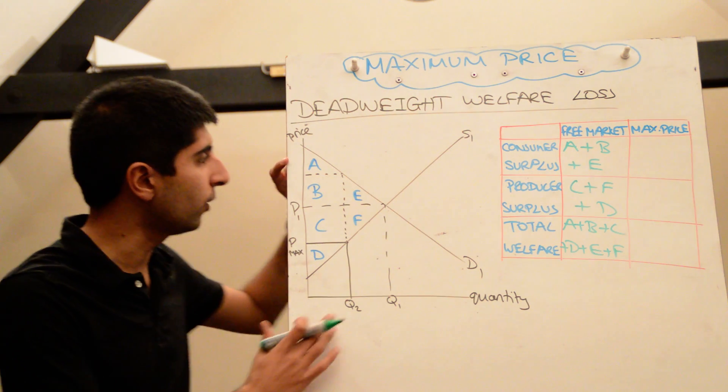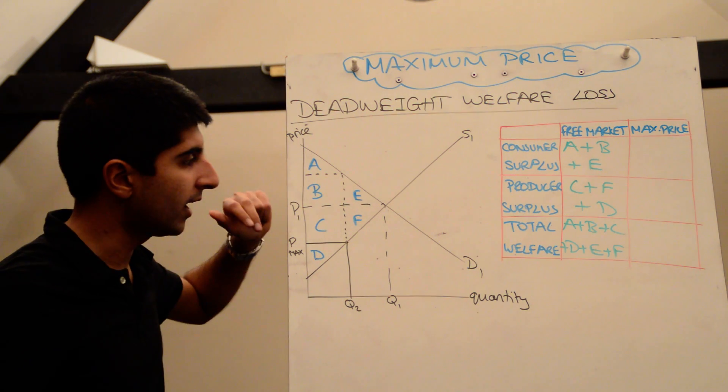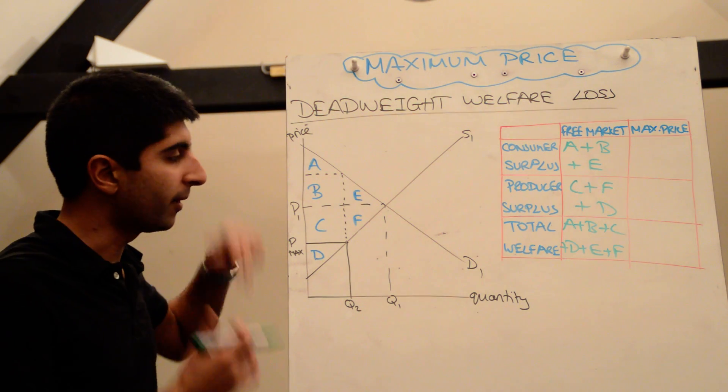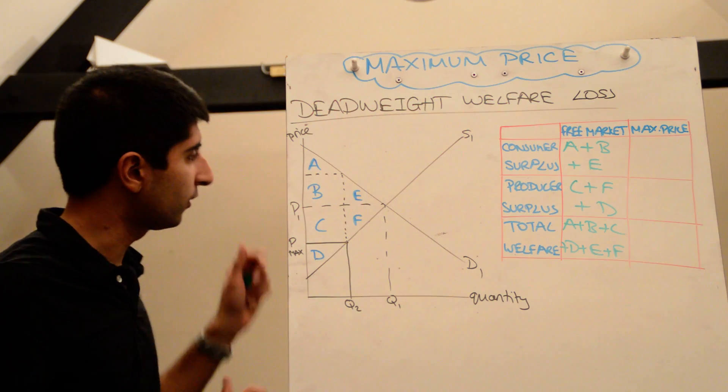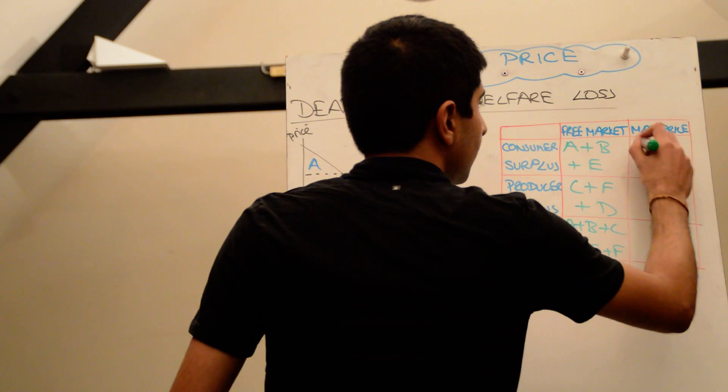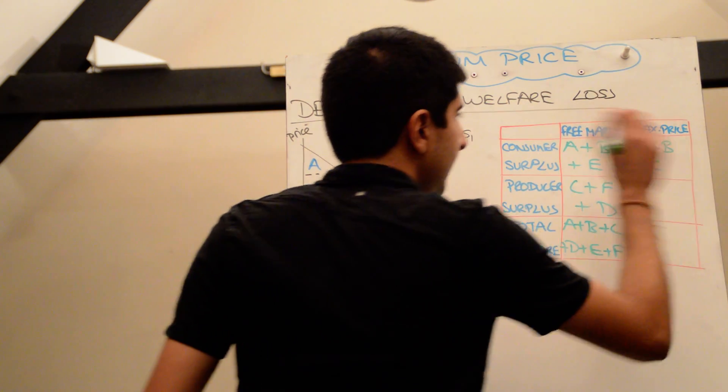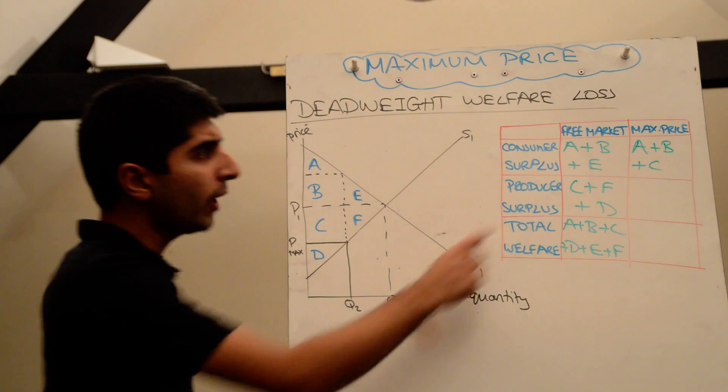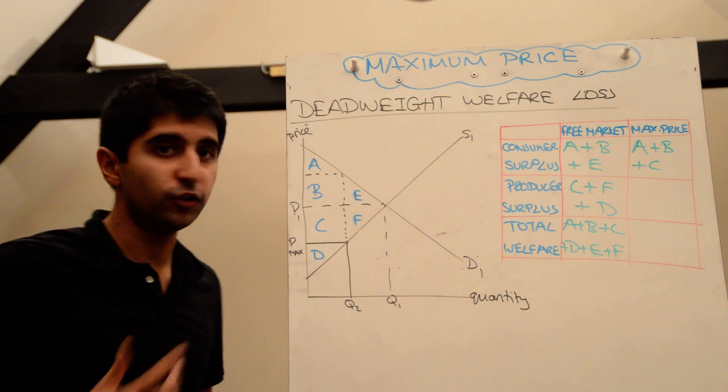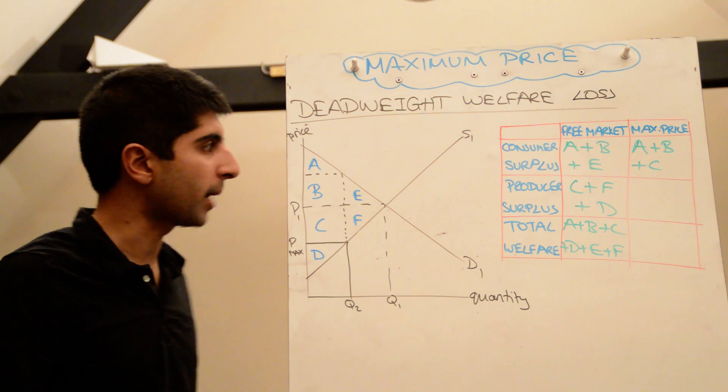given that only Q2 is actually sold, the consumer surplus is the area below the demand curve but above the price, given the amount of units actually sold, which takes us to A plus B plus C. So although area E has been lost in terms of consumer surplus, that's been recovered by area C in some respect.